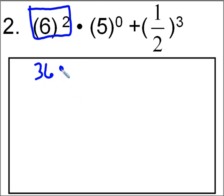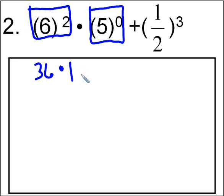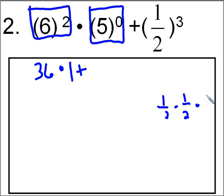It's going to be 36 times, and then I can go ahead and do five to the zero power. Any base to the power of zero is one. And then I'm going to add one-half to the third power. I'm going to work this one out off to the side — one-half times one-half times one-half, because that's what a power is: repeated multiplication. One times one times one, my numerator is going to be one. And two times two times two is eight. So it's going to be plus one-eighth.